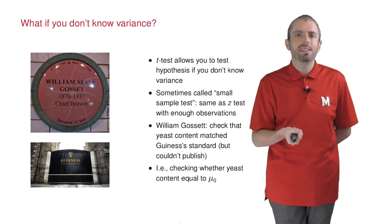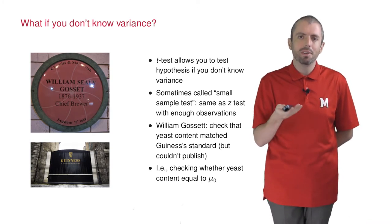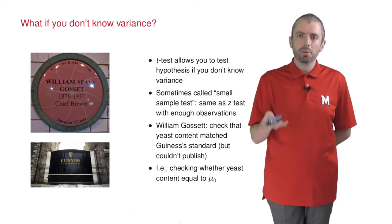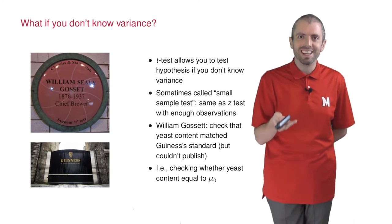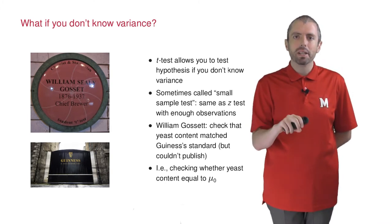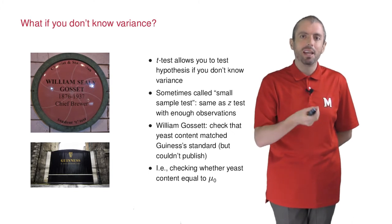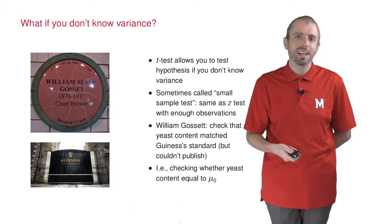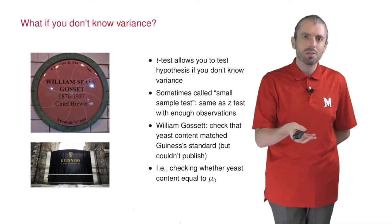This is sometimes called student's t-test because the person who invented it, William Gossett, was a brewer at Guinness, a brewery in Dublin. He needed to check for a batch of beer whether the yeast content of a batch was up to Guinness's high standards. If you reject mu, reject the brew.